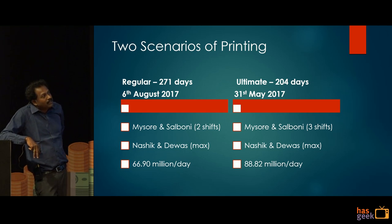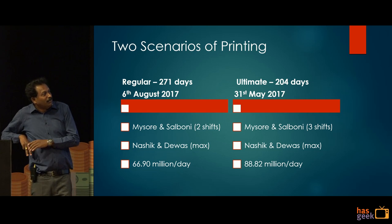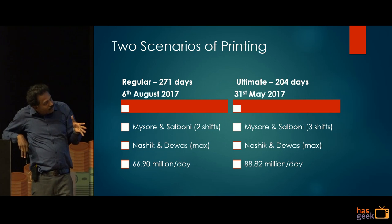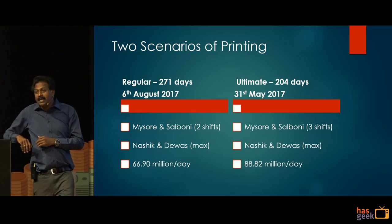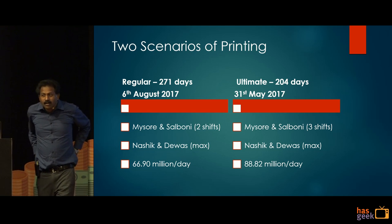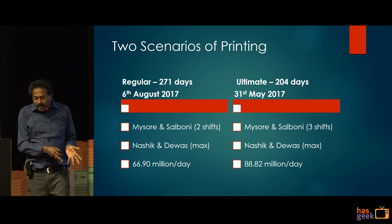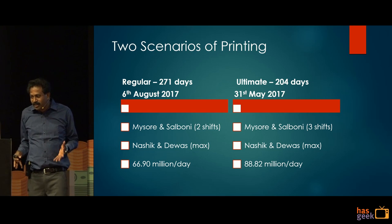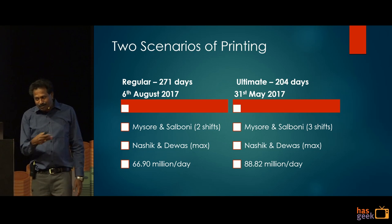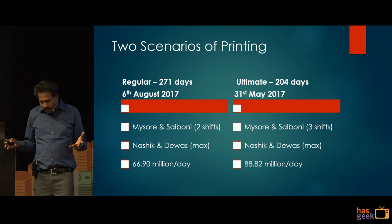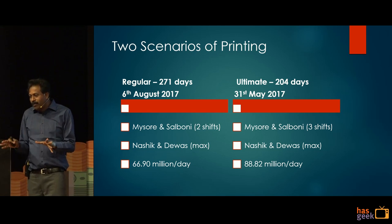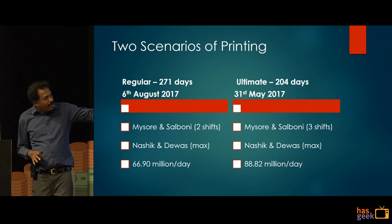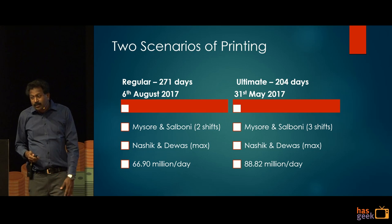Alternatively, if Mysore and Salboni — which belong to the Reserve Bank — run three shifts, there is still a problem. These are high-security printing presses; you cannot hire random workers because of the security risk that workers could start printing counterfeit notes themselves. The existing workforce can perhaps be asked to work extra for two or three weeks, but beyond that three-shift operation is unsustainable. Even under this assumption, it would still take around 204 days.